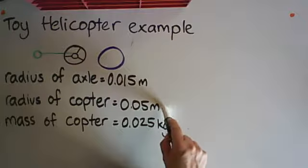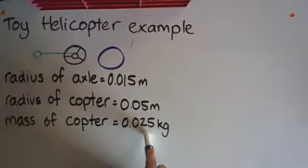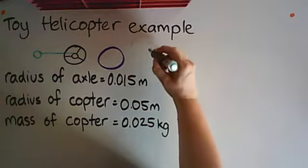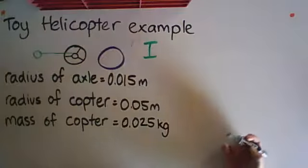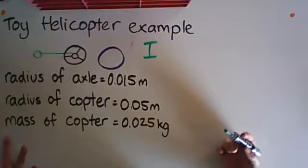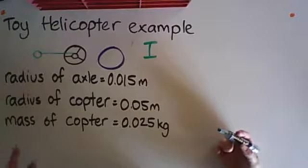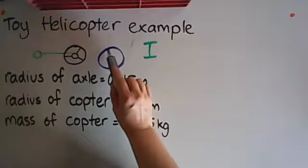We're asked first to calculate the rotational inertia. To do that, we need to know how the mass is distributed. Luckily for us, we are told in the question—in fact, we're usually told in the question—that we can assume that the mass is distributed around the outer edge.